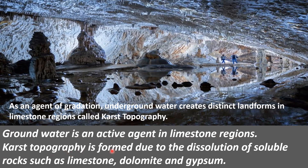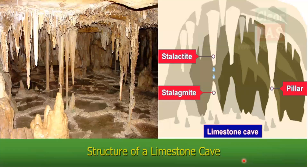Karst topography is formed due to the dissolution of soluble rocks such as limestone, dolomite, and gypsum. In a limestone cave, stalactites grow down from the cave ceiling while stalagmites grow up from the cave floor. As carbon dioxide is released, calcite is precipitated — that is, redeposited — on cave walls, ceilings, and floors.